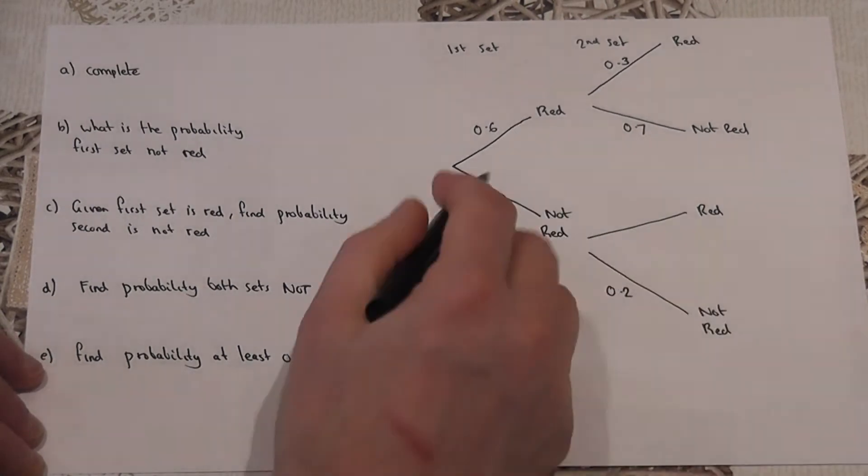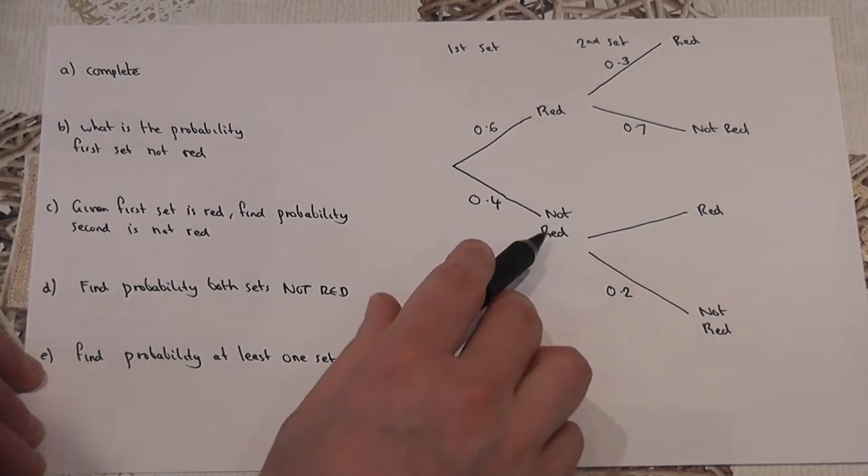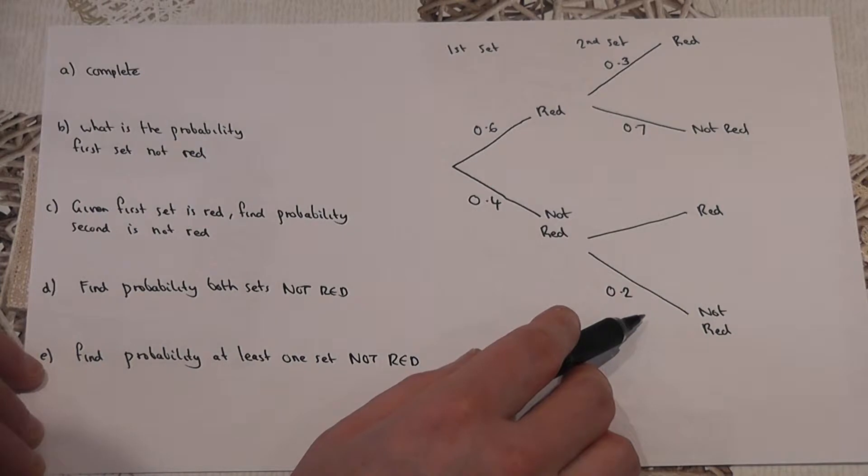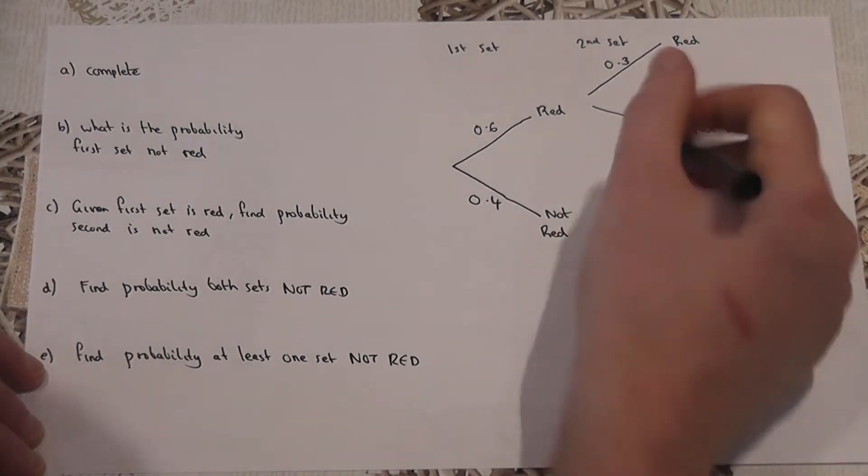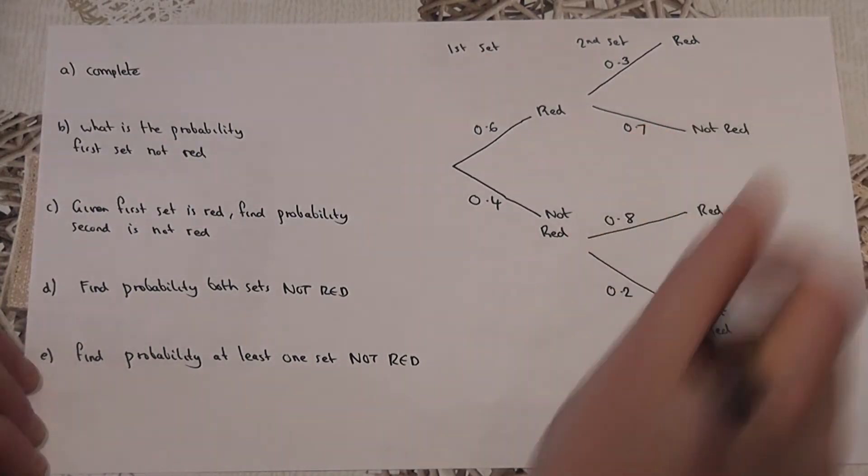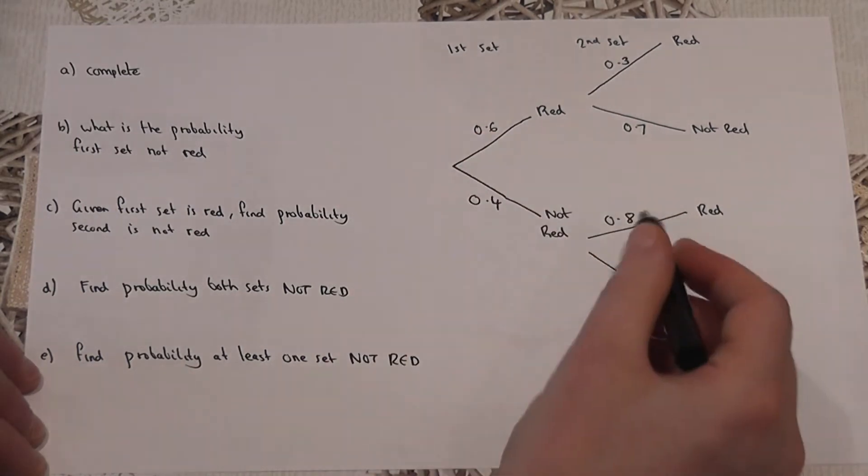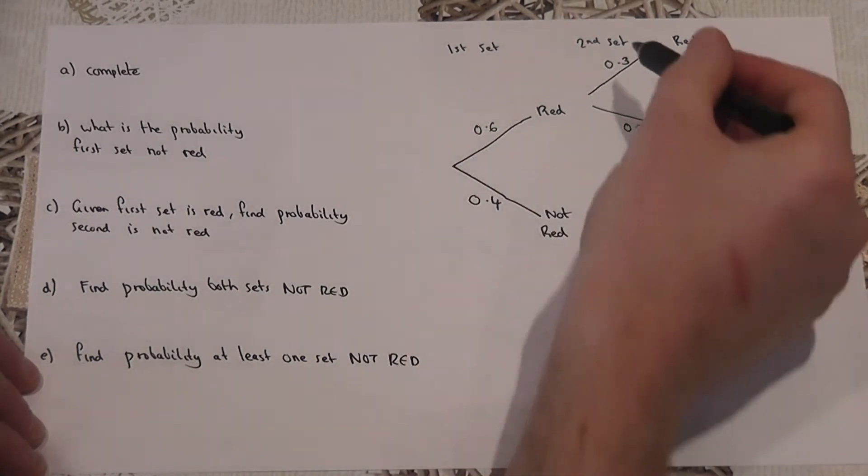However, if the first set is not red, the chance of the second set not red is 0.2. So the chance of being red must be 0.8. Each pair of brackets adds up to the whole one.